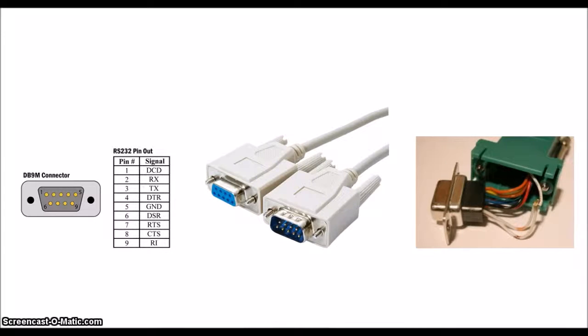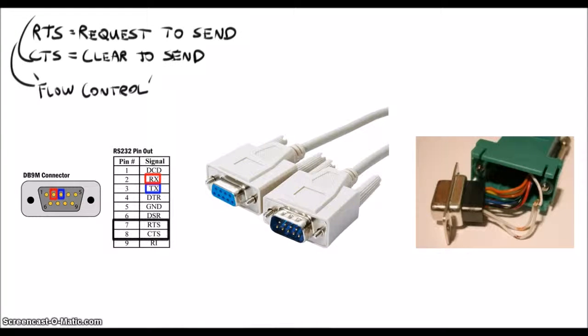But I thought we would only need two wires, one for transmit and one for receive. Well, you need some other pins to handle what I like to think of as the formalities of the communication. These include pins seven and eight which provide the request to send and clear to send capabilities, collectively known as flow control.